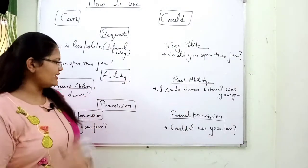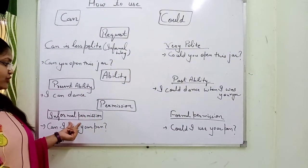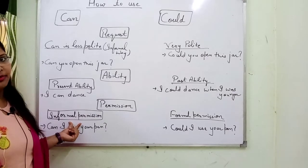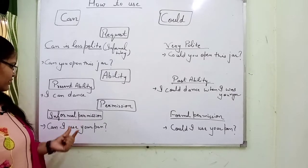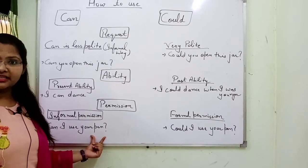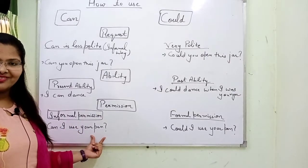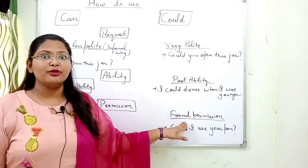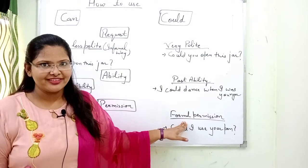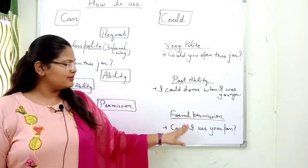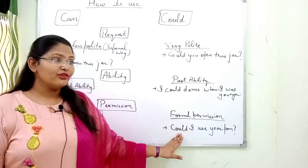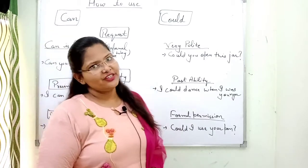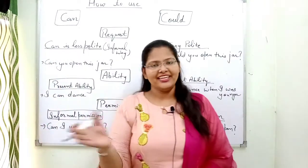Can is used to take informal permission. For example: can I use your pen? And could is used to take formal permission. For example: could I use your pen? So this is the difference between can and could.